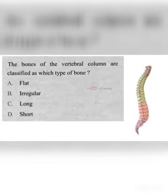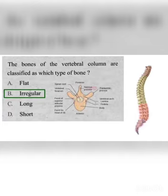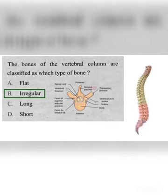The bones of the vertebral column are classified as which type of bone? A. Flat, B. Irregular, C. Long, D. Short. The correct answer is B. Irregular. Irregular bones vary in shape and structure and therefore do not fit into any other category like flat bone, short bone, or long bone. Irregular bones often have a fairly complex shape which helps protect internal organs.